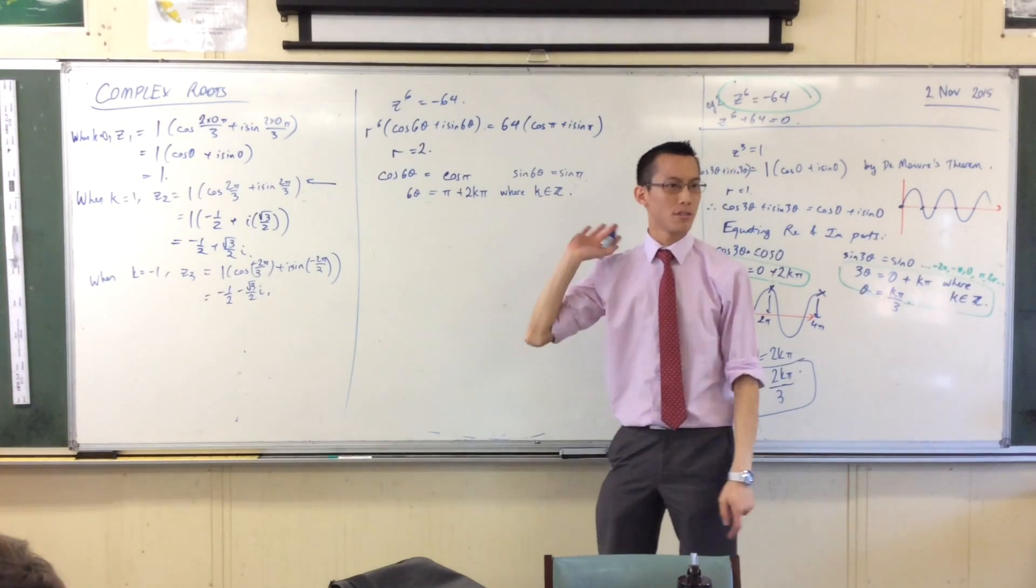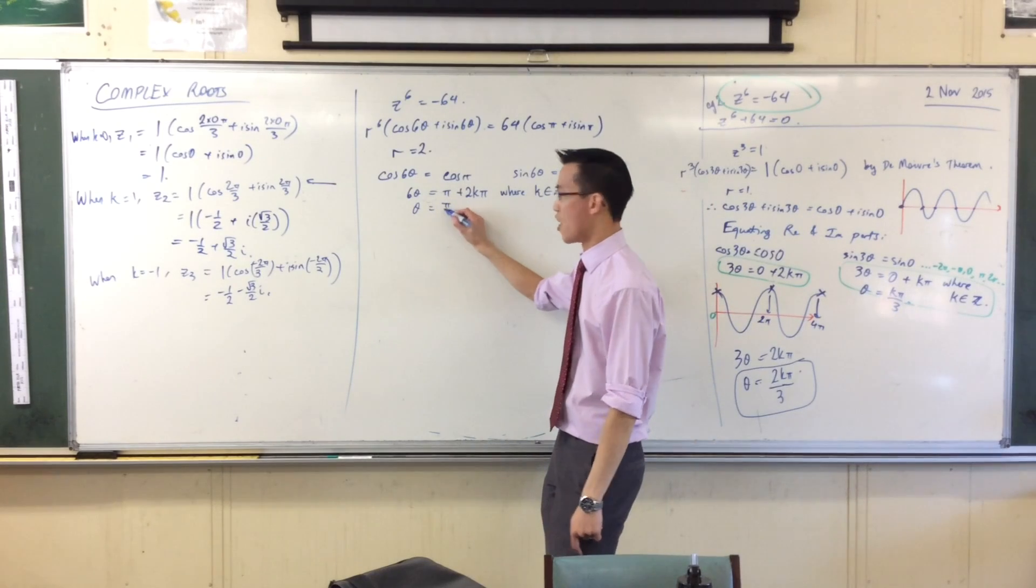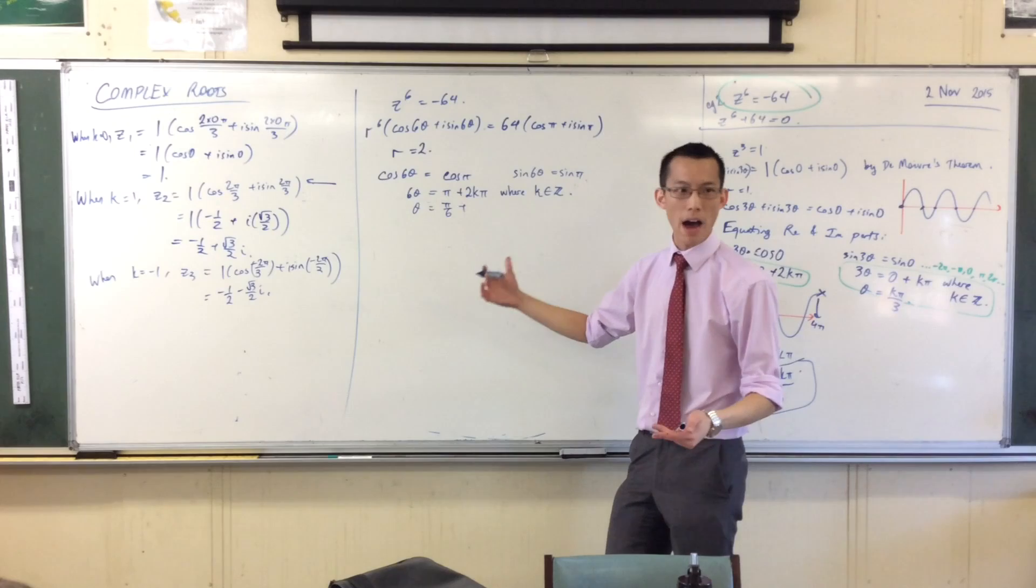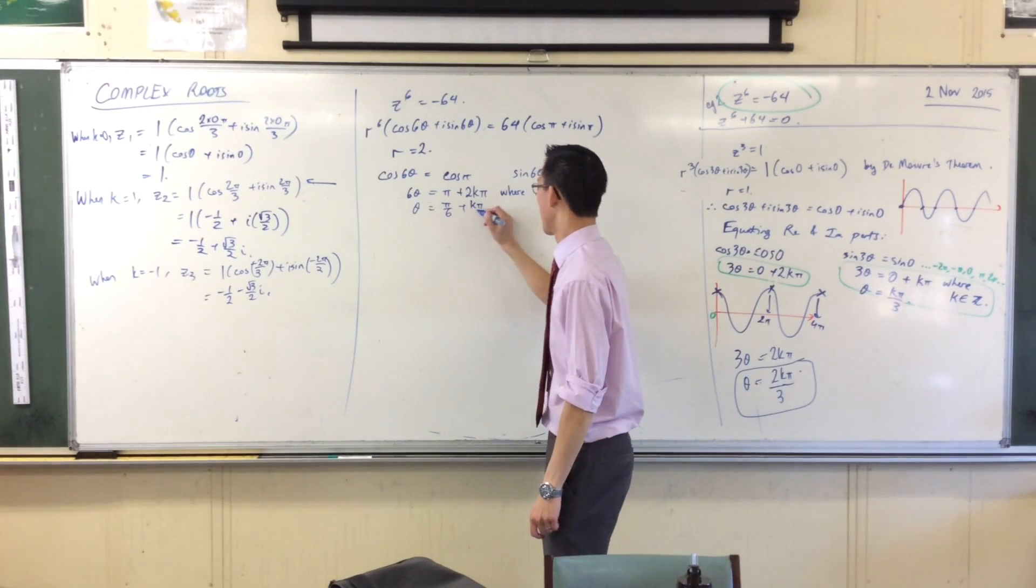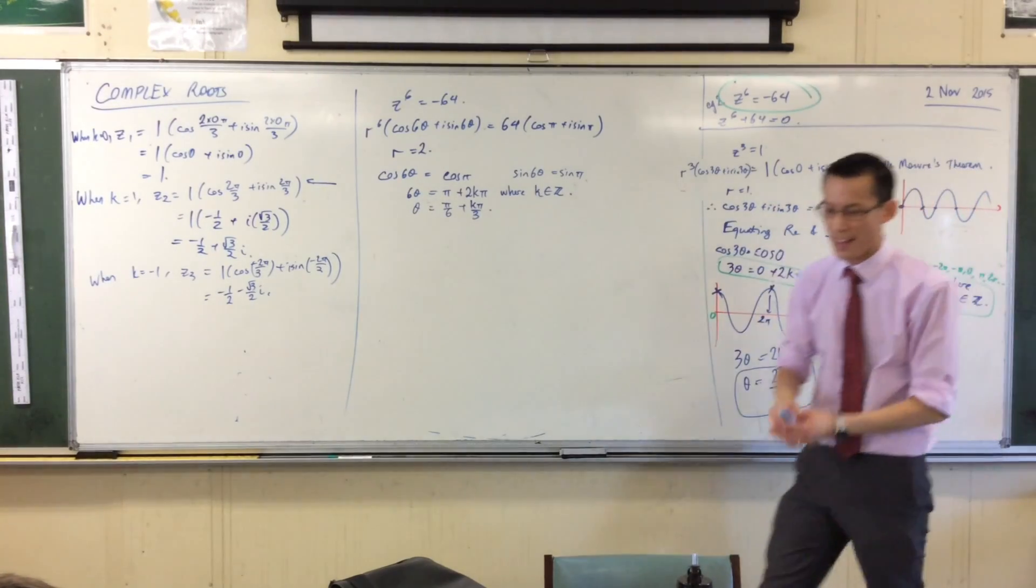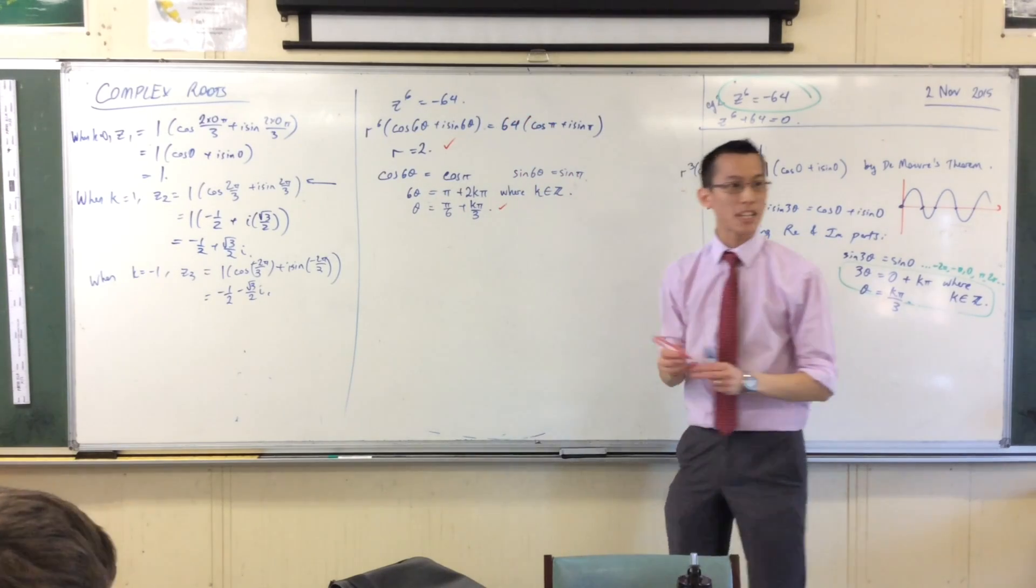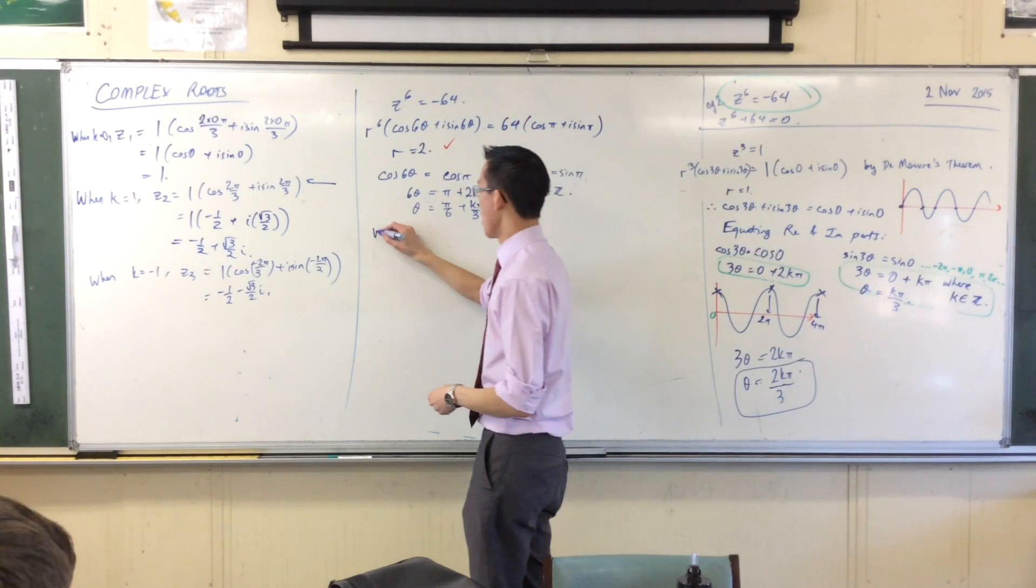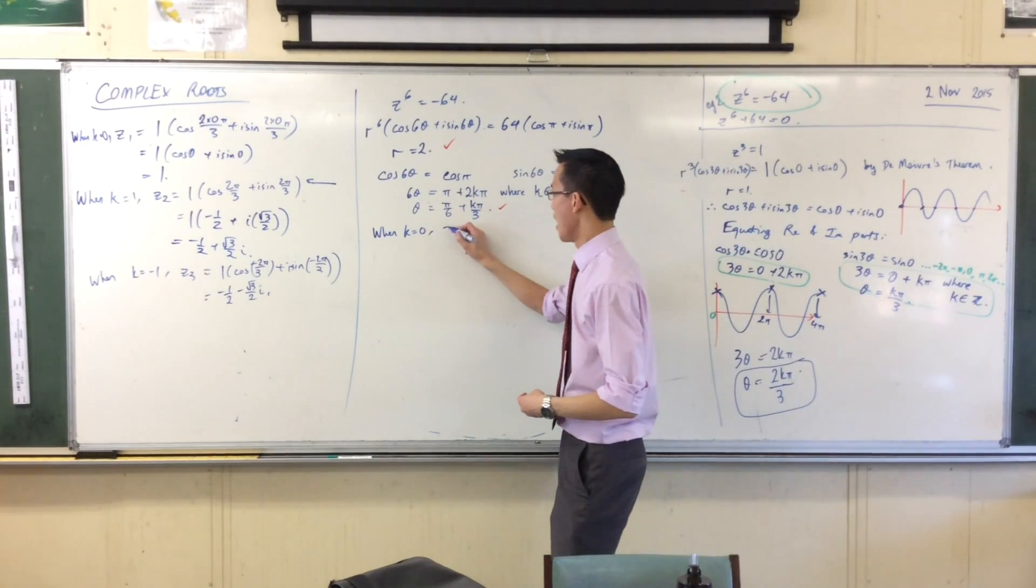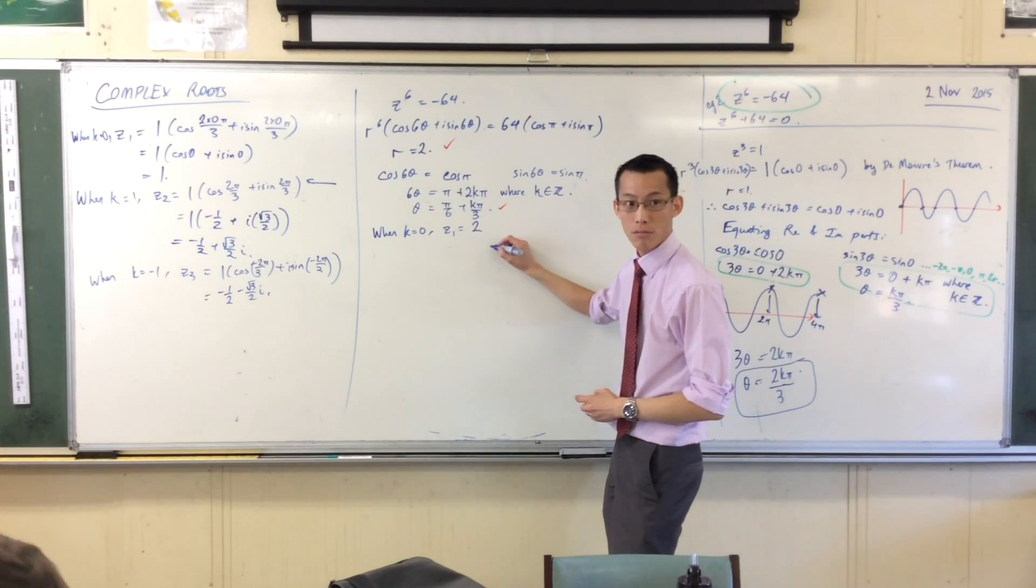So now, I just have to divide through. I just want theta after all. So I can say theta equals pi on 6 plus 2k pi on 6, which is k pi on 3. That was a lot quicker because we didn't have to talk through the mechanics of why. So you can see now I've got my modulus, I've got every different argument that I want. So let's go through them. When k equals 0, I always start with 0 because that's the easiest one to work out. I'm going to get a solution Z1.